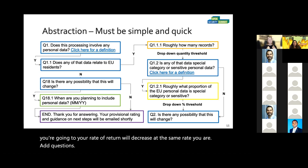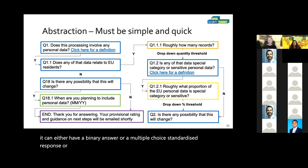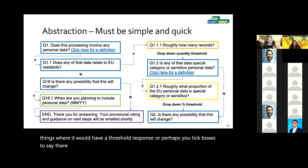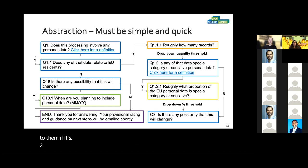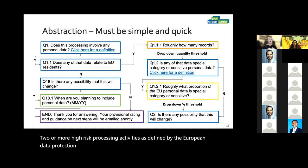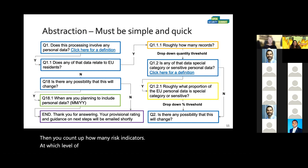You weight the answers behind the scenes. You don't ask anything unless it can have either a binary answer, a multiple-choice standardized response, or a threshold response — so these things can be analyzed. Where it would have a threshold response, you tick boxes to say there are a specific number of risky types of processing as defined by the European Data Protection Board, and those would then have a weighting attached. If it's two or more high-risk processing activities as defined by the EDPB, it puts it into a high-risk category. Then you count up how many risk indicators are at which level of risk to produce a score.